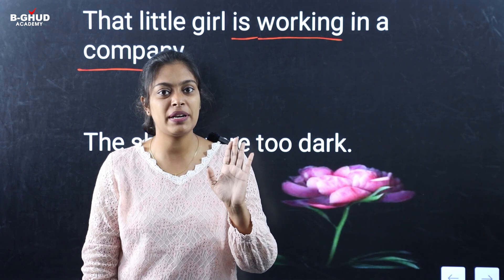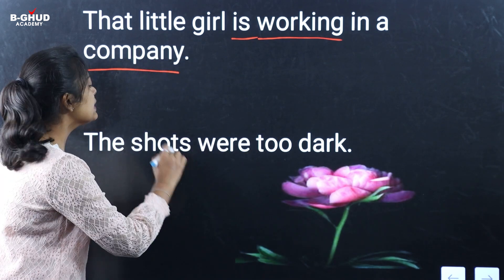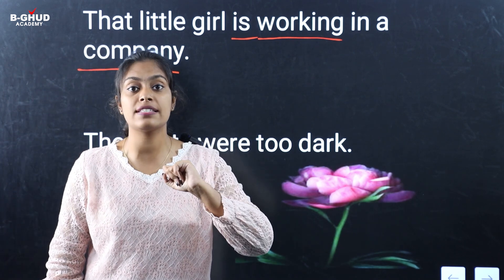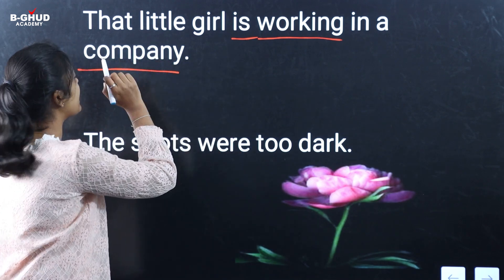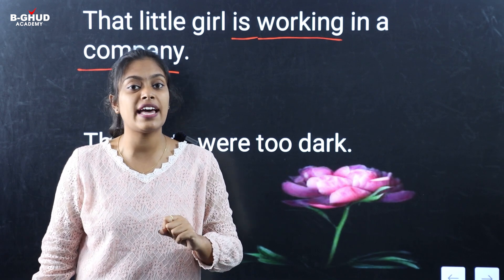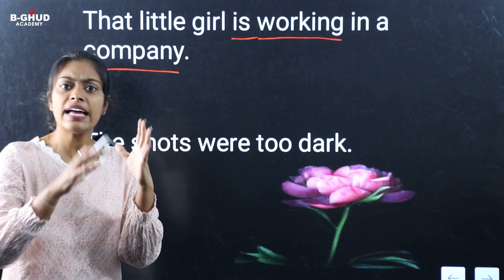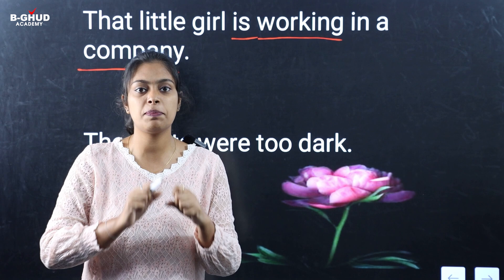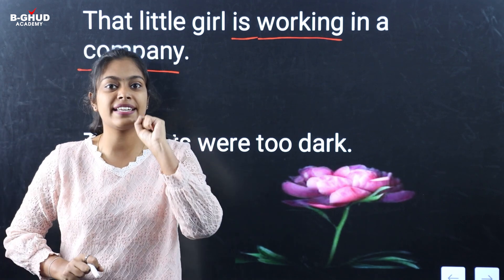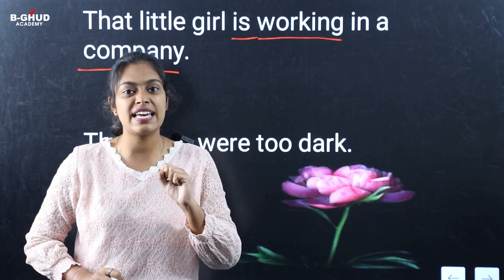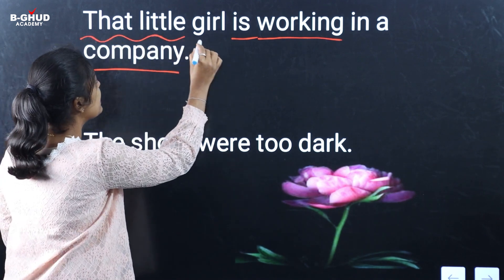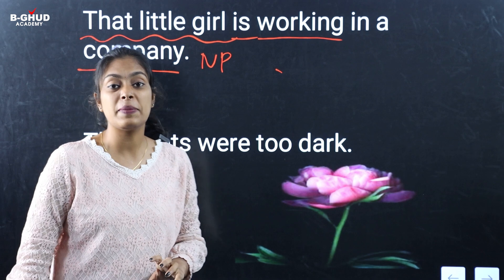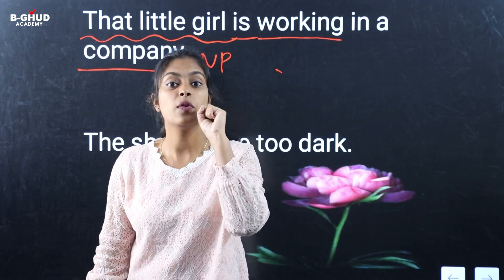Is working in a company — that is the verb phrase. Now look at: 'The shorts were too dark.' The first part is the noun phrase. What is the noun phrase? 'That little girl' — that is the noun phrase. The verb phrase is 'is working in a company.' Now for 'The shorts were too dark': 'were' is the auxiliary verb, so 'were too dark' is the verb phrase. 'The shorts' is the noun phrase.